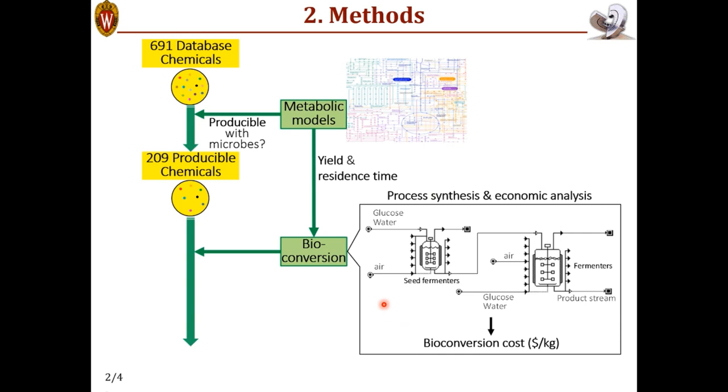And this cost is then used to develop the first of our three screening criteria. Specifically for each chemical product, its current market selling price has to be greater than this bioconversion cost to be economically feasible. And this has to be true because at this point, we haven't even included downstream separation cost yet.